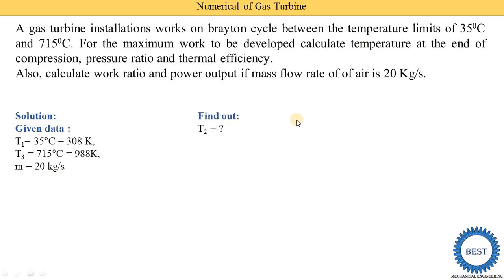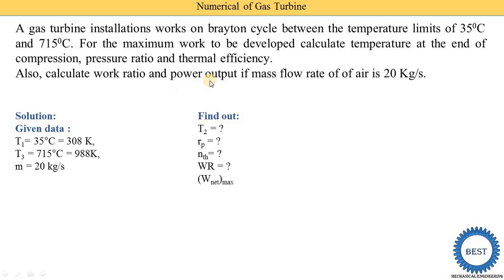What we need to find: first, T2 — the temperature at the end of compression; second, the pressure ratio RP; third, the thermal efficiency; fourth, the work ratio; and last, the power output, which is the maximum net work.